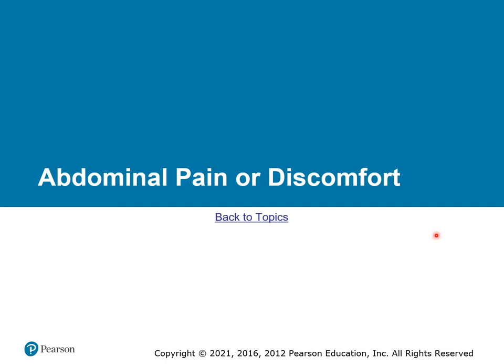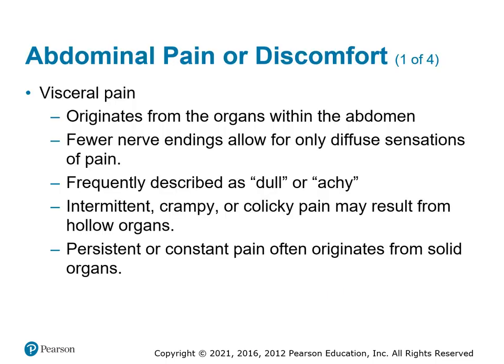Abdominal pain and discomfort: visceral pain usually comes from the organs themselves — stomach ache, liver pain, pancreatitis. Because organs do not have sensory nerve endings, you don't have that direct feeling. It's going to be a dull, achy, diffuse pain. Liver pain, for example, would be across the upper quadrants because you can't narrow it down. Intermittent crampy pain comes from hollow organs; persistent pain comes from solid organs.